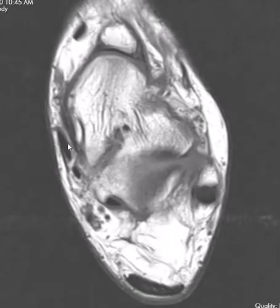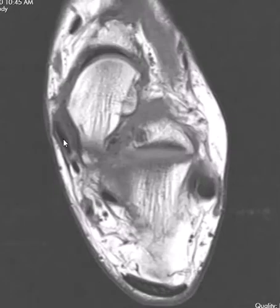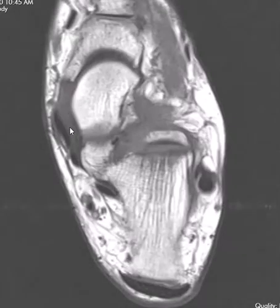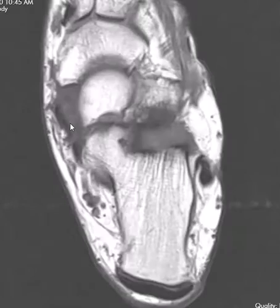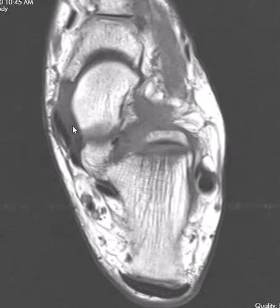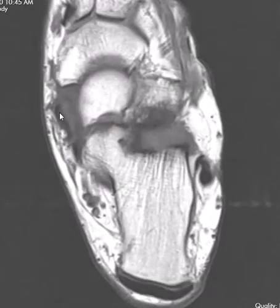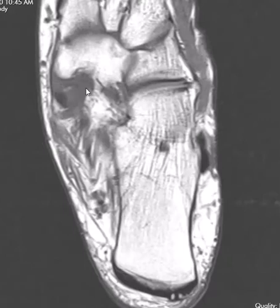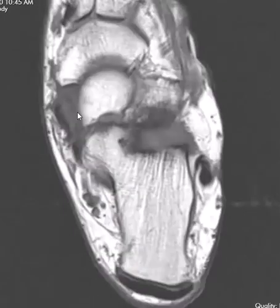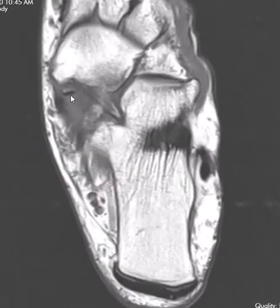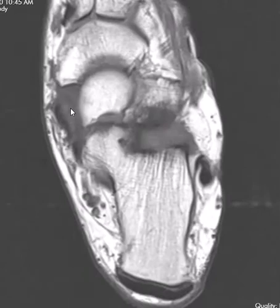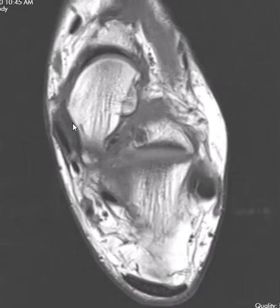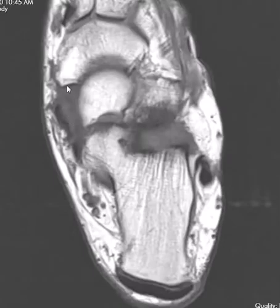On the axial image, this is the posterior tibial tendon. As the PTT comes down, we see gray signal deep to it, which is not normal. That's the spring ligament — it looks like it's partially torn or chronically thickened. Coming down to its insertion, this big glob of gray signal at the insertion is abnormal. If you had just a little and it fanned out you'd be fine, but this is too much. The spring ligament thickening underneath is another sign of posterior tibial tendon dysfunction.